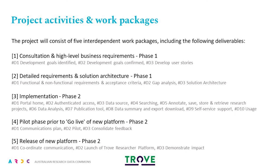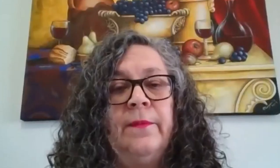The project will consist of five interdependent work packages with a set of deliverables for each. Work package one, phase one, will lead the consultation and develop the high-level business requirements. The three key deliverables are: development goals identified through the consultation process, confirmation of the development goals, and user stories developed based on the feedback received. Work package two will develop the detailed requirements and solution architecture, further developing the use cases and considering the technical infrastructure required. Deliverables include functional and non-functional requirements and acceptance criteria, a gap analysis, and the solutions architecture.